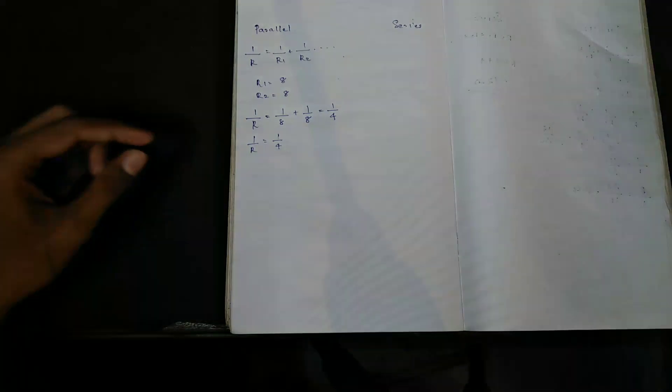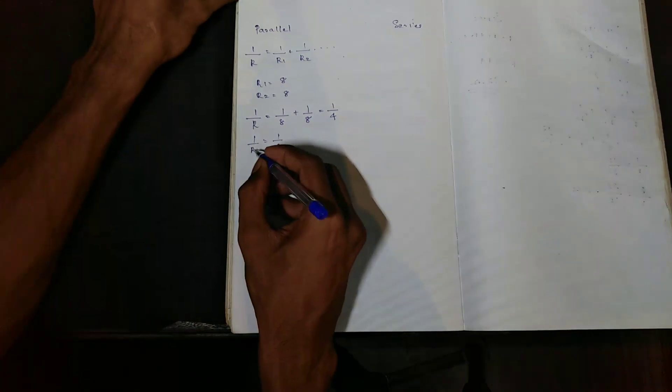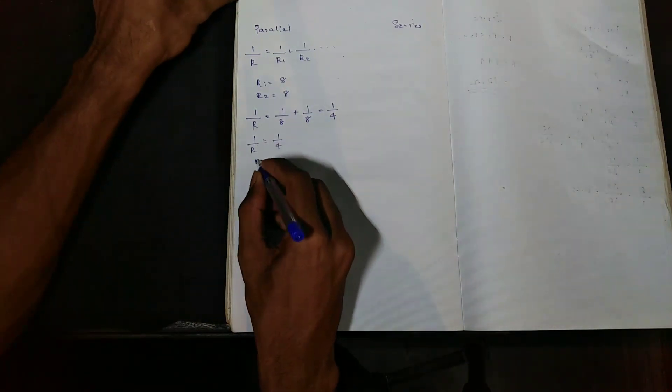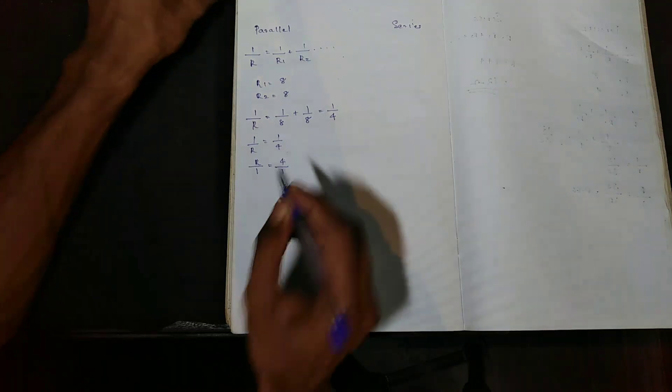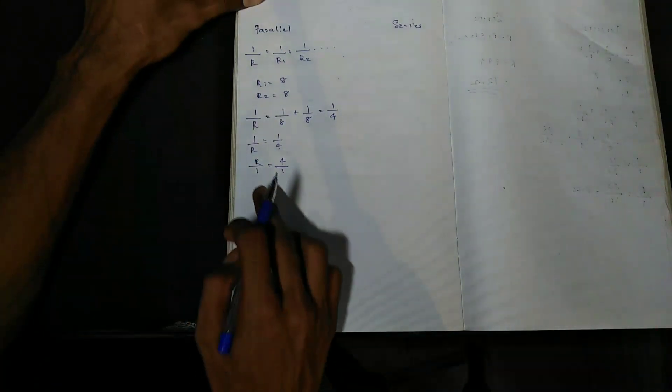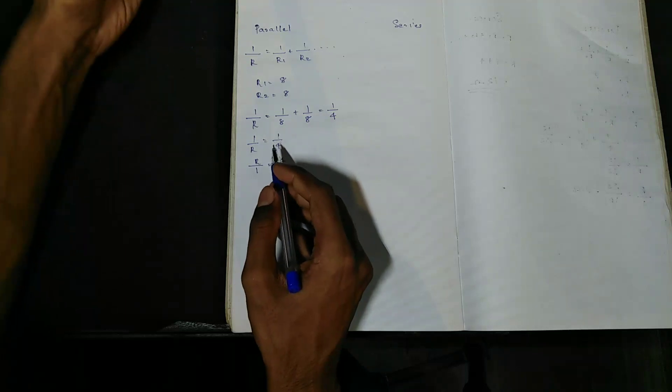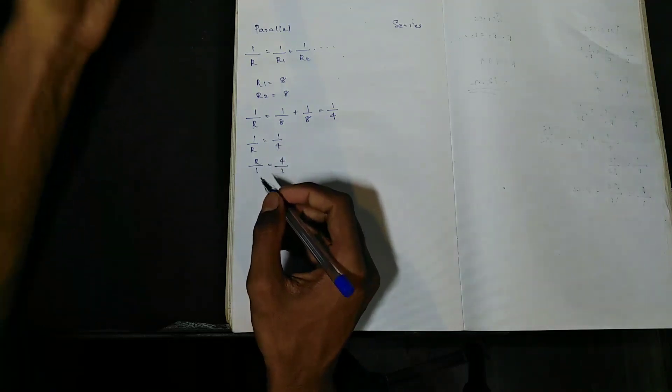So 1 by R equals 1 by 4. Then R is the first value — the resistance. We have two speakers and we need to calculate the combined impedance. So 1 by R equals 4 by 1, and R equals 4 by 1, which means R equals 4 ohms. Now R1 ohms — this is the 4 ohms result from the two parallel speakers.